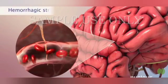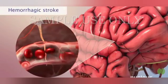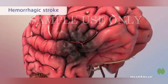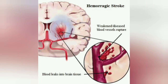During a stroke, oxygen and nutrients in the blood can't get to those brain cells, and the cells start to die within minutes. A less common type of stroke is called a hemorrhagic stroke. It occurs when a weakened blood vessel breaks open and leaks blood into the brain, blocking blood vessels and putting pressure on brain tissue, damaging it.